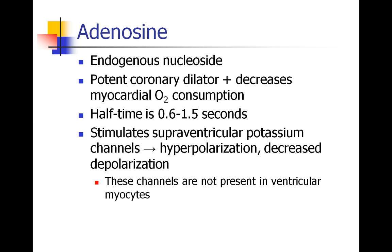The next drug I want to talk about is adenosine. Some people get adenosine and amiodarone confused when they're first learning about them, but they are very different drugs. Adenosine is actually a substance found endogenously in your body — it's a nucleoside. Its effect in the physiology is that it's a coronary dilator and it decreases myocardial oxygen consumption, so that's a good thing.